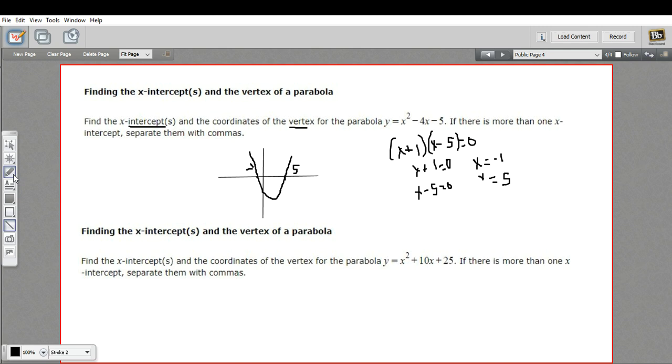the vertex is going to go on a line that is right between the x-intercepts. So if I find the midpoint between negative 1 and 5, which is 2,